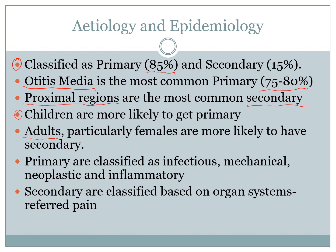When we look at simple classifications of what causes primary pain, primary pains are caused by infectious, mechanical problems, cancers within the regions, and inflammatory problems. Whereas for secondary, there's a huge list that is usually classified based on the organ system that the referred pain is coming from.